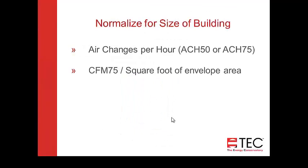Normalizing for the size of the building is typically done using the volume or the square footage of the surface area — the envelope area. More and more standards are moving towards CFM per square foot of envelope area, for obvious reasons: the building leaks at its surface area, not its volume. There's not a good correlation, especially in bigger odd-shaped buildings, between air changes per hour and CFM per square foot of surface area. Because the leakage is on the envelope area, it's best to use that metric.